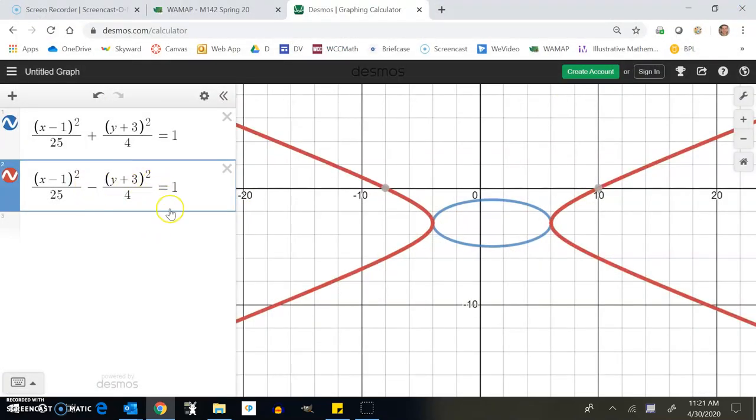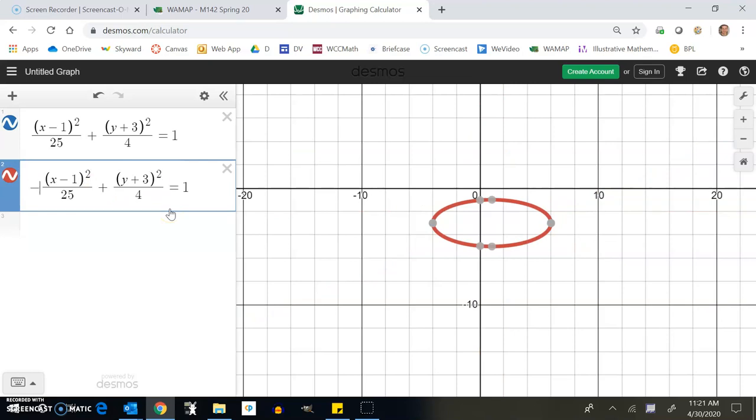What if I went the other way? What if instead of subtracting the x, I subtract the y term? Same idea. I still have the box but it turns it up and down instead of left right.